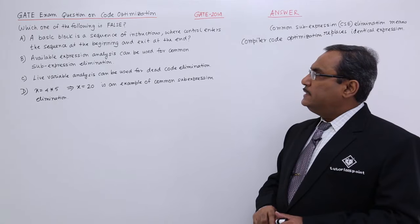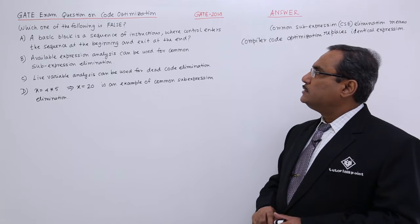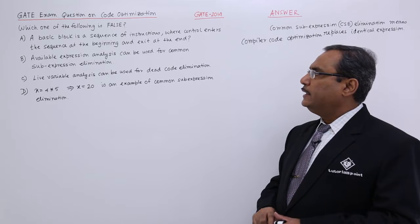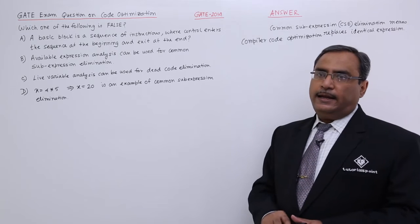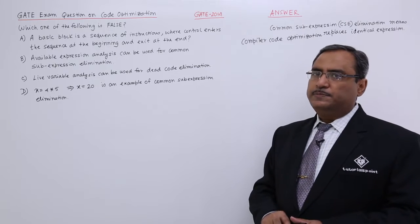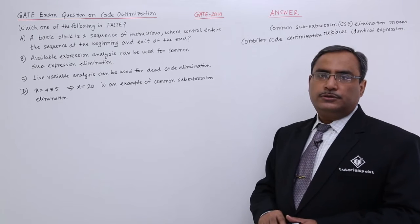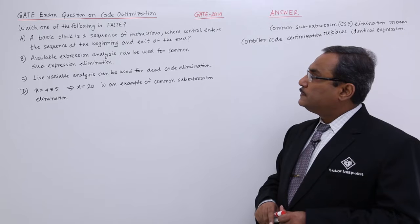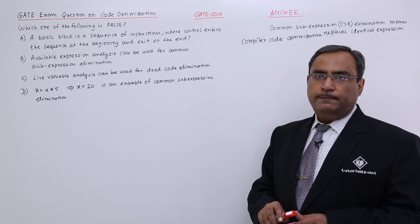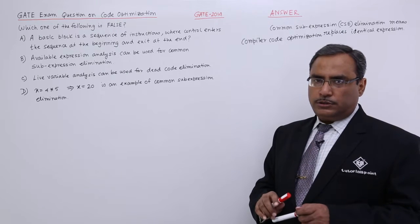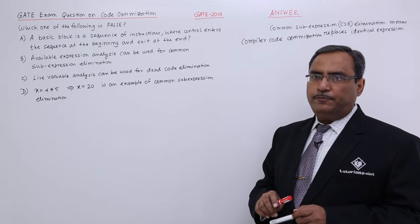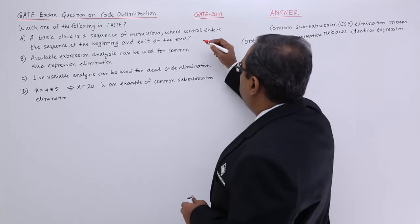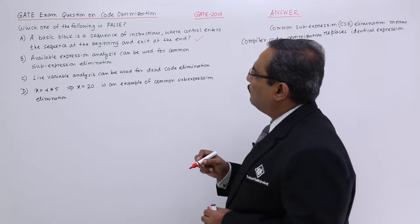A basic block is a sequence of instructions where control enters the sequence at the beginning and exits at the end. I think this particular statement is true, it is not false. Because obviously, the control, the sequence of instructions will be divided into multiple basic blocks and each and every basic block will have a single entry point and single exit point. So this particular statement is correct, is not false.